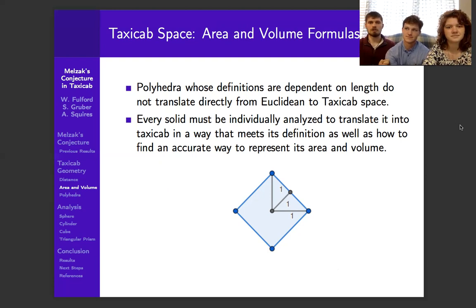So because of this change in length, polyhedras whose definitions are dependent on length don't translate directly from Euclidean to taxicab space. For example, pictured here is a taxicab circle.